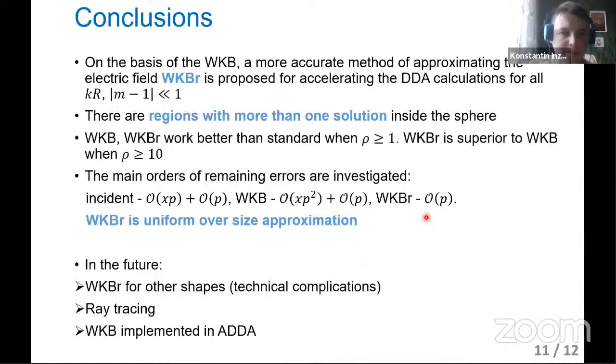Let's move on to conclusions. On the basis of WKB, a more accurate method of approximating the electric field, WKB with refraction, is proposed for accelerating DDA calculations for different sizes and optically soft particles. It was shown that there are regions with more than one solution. We showed where WKB and WKB-R work better than other approximations. The main conclusion is that WKB-R is uniform over-size approximation. In the future, we want to generalize our results for other shapes. But here we have technical complications.